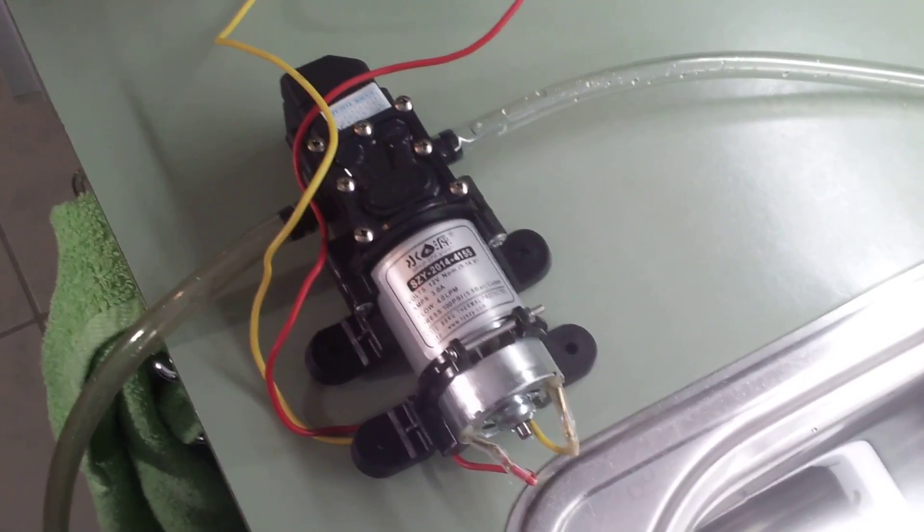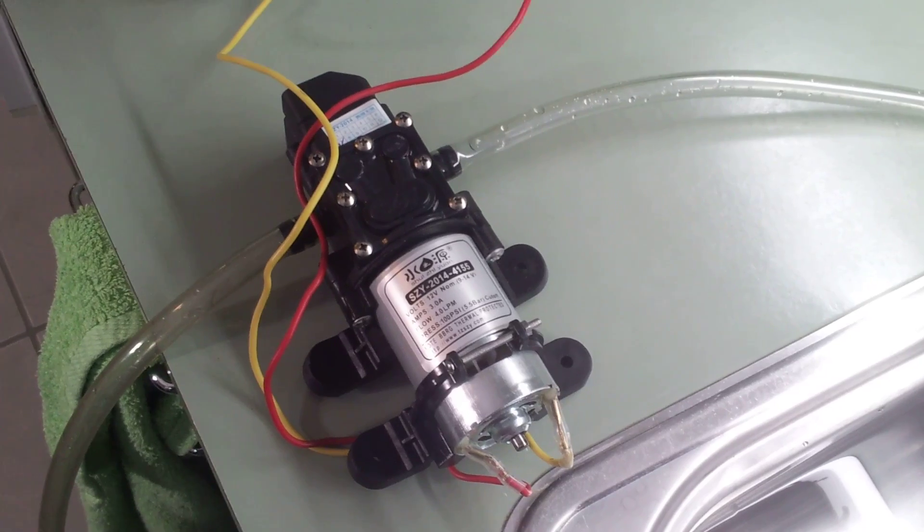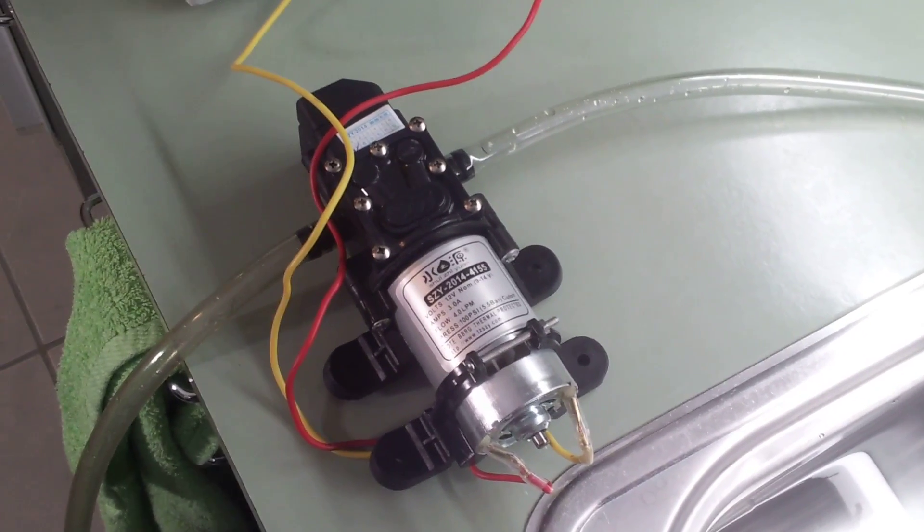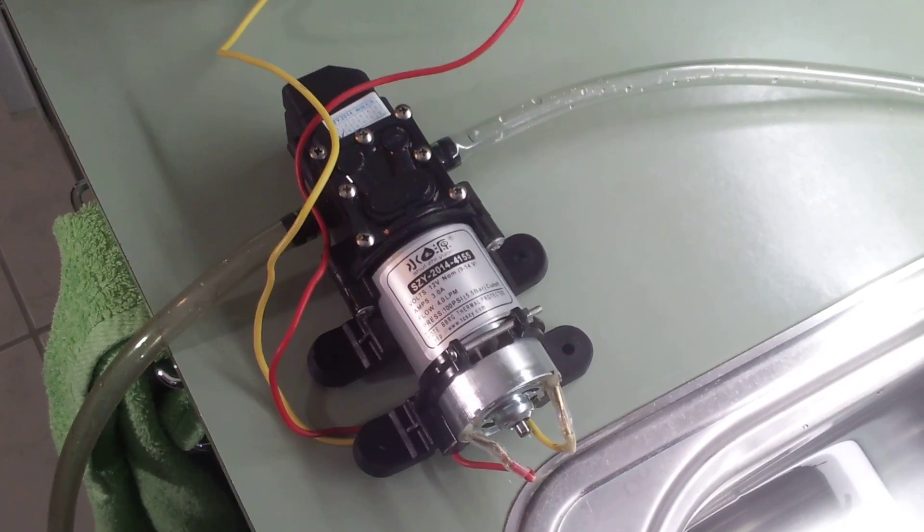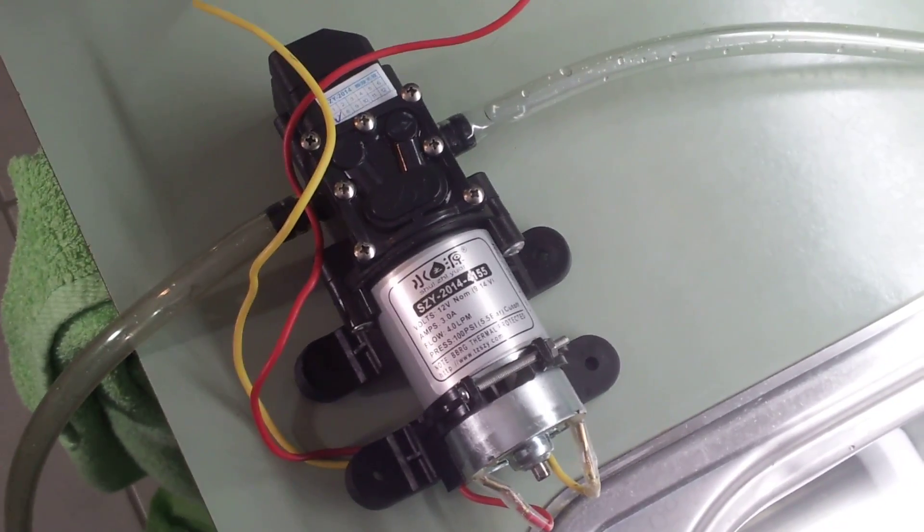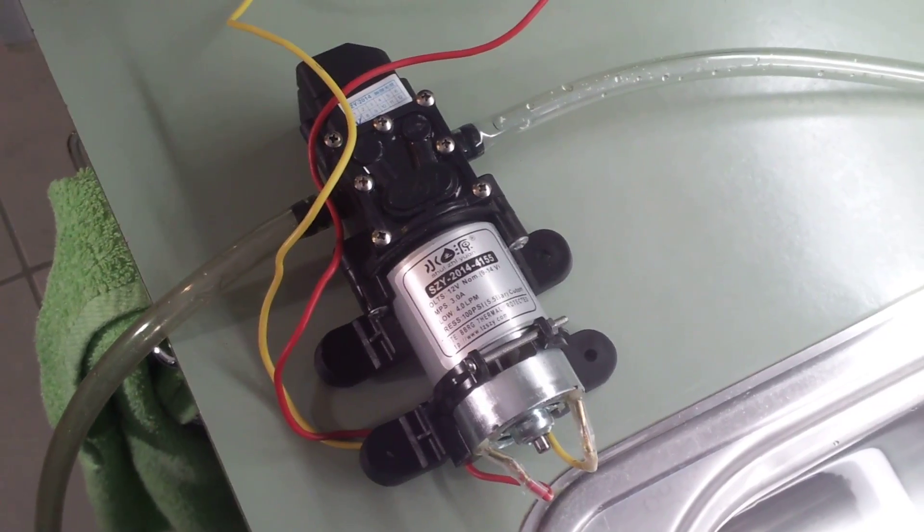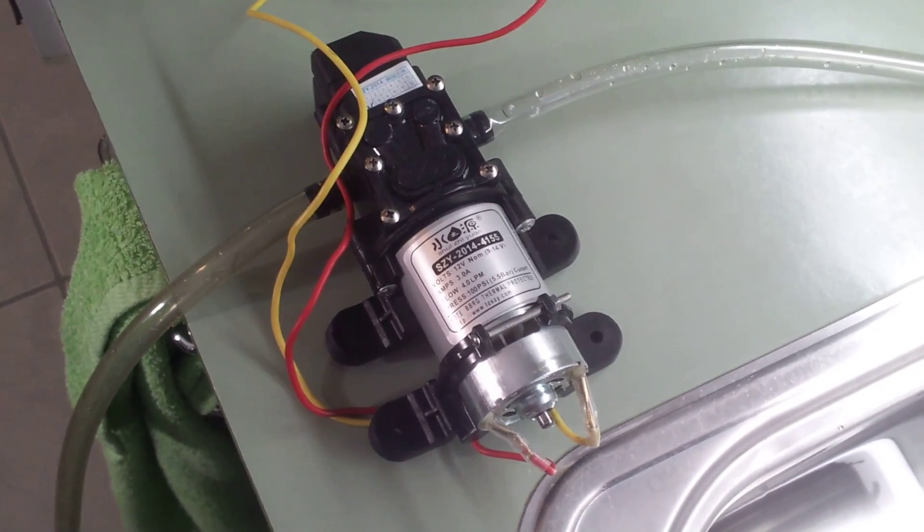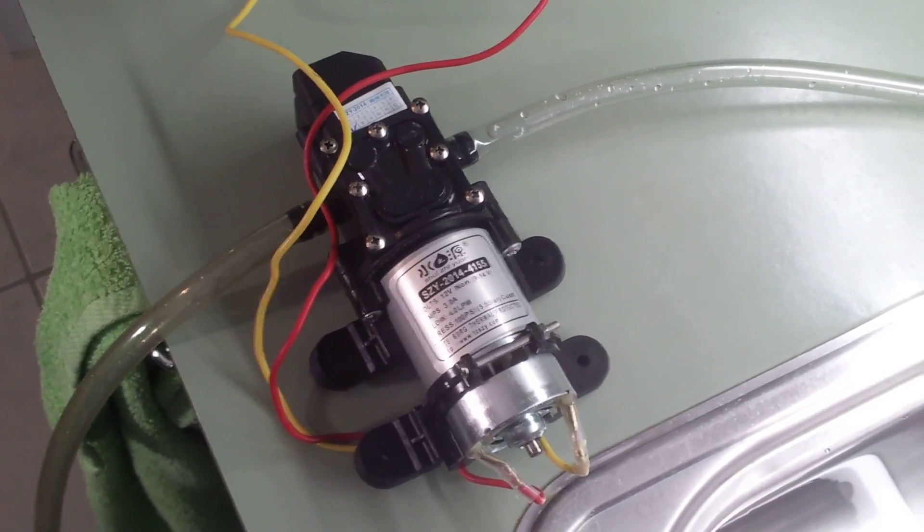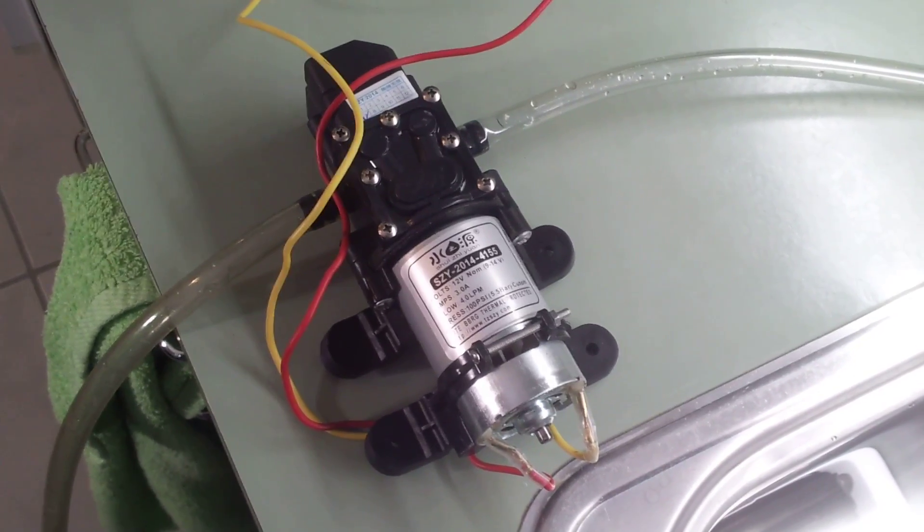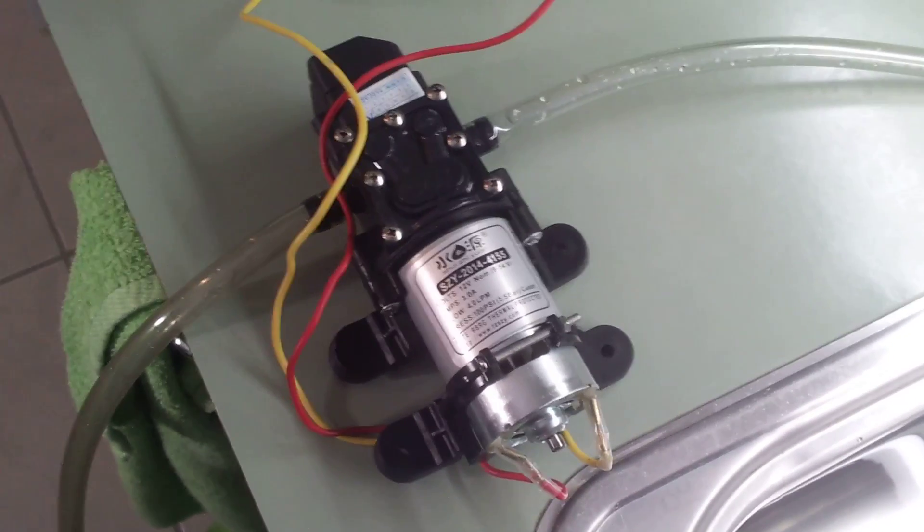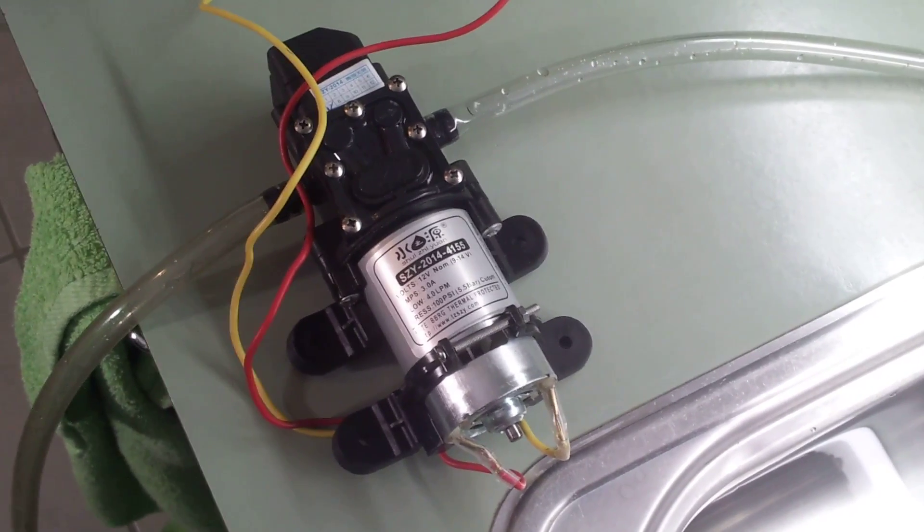I found some videos of very similar models on YouTube where you see people hooking high pressure tubing up to them, running garden hoses and things like that. Now if you convert 100 psi to kPa you get almost 700 kPa which is about what mains pressure here in my city runs at. So in theory this is a very powerful pump when running at full power.